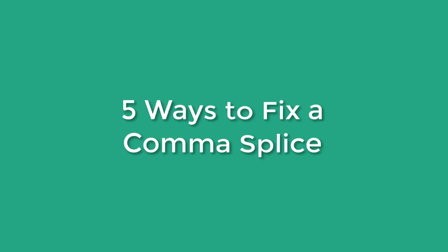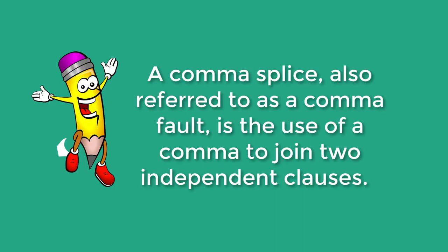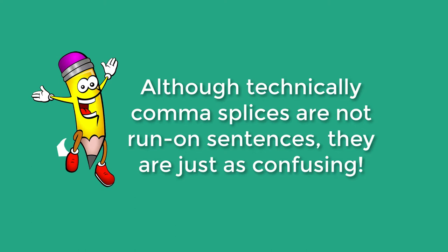In today's lesson, we will learn about the tricky comma splice. A comma splice, also referred to as a comma fault, is the use of a comma to join two independent clauses. The comma splice is considered a punctuation error, and although technically not a run-on sentence, comma splices are just as confusing.